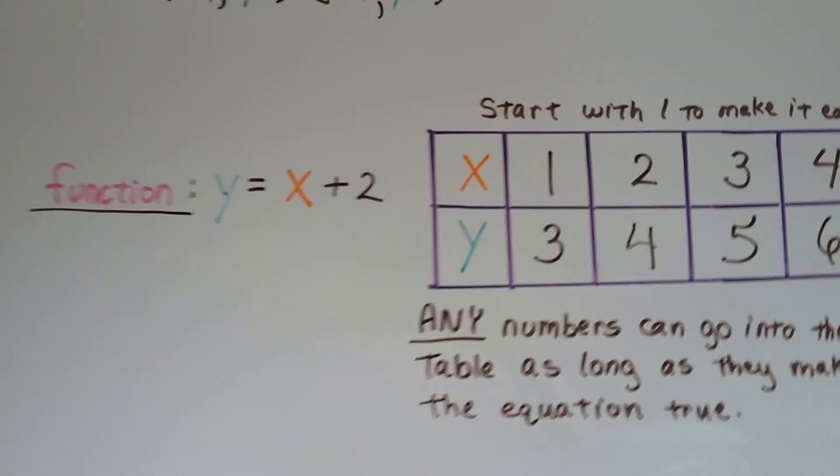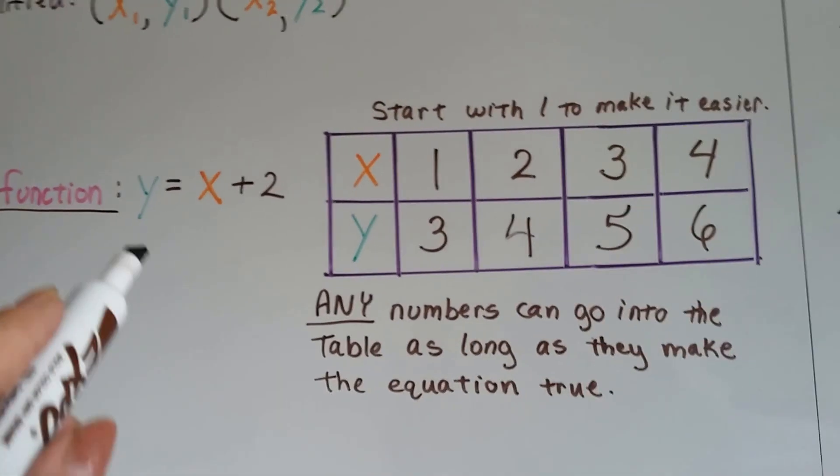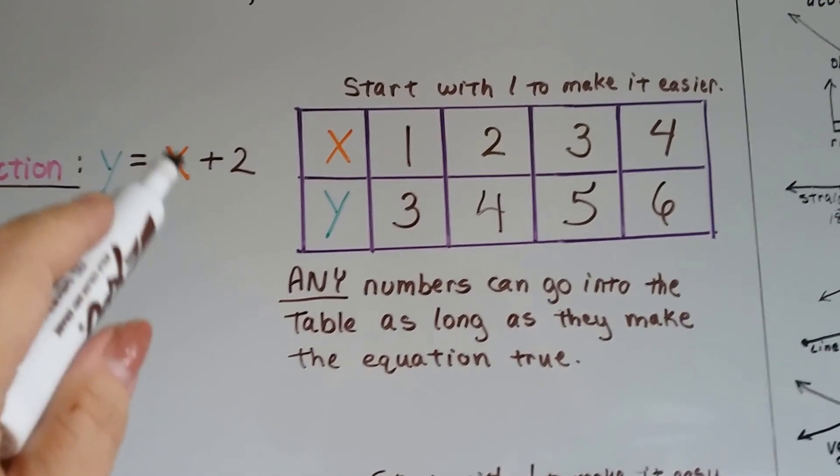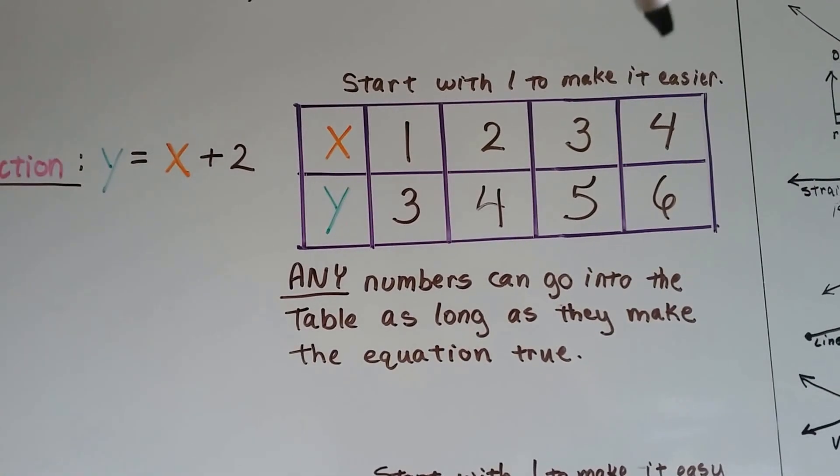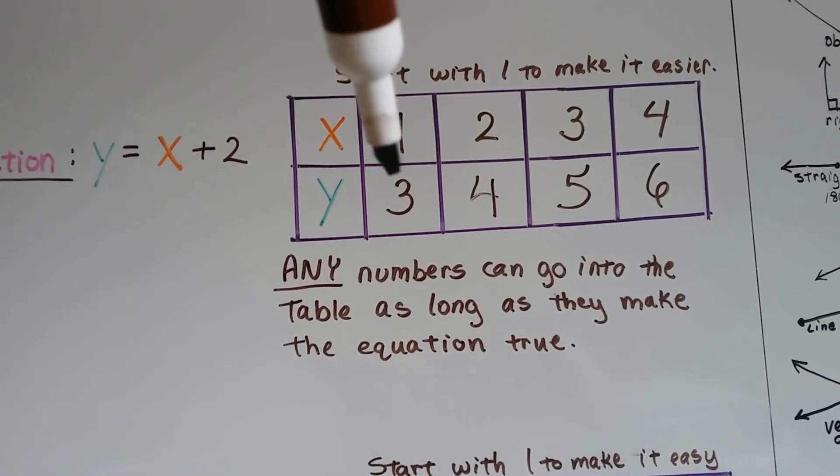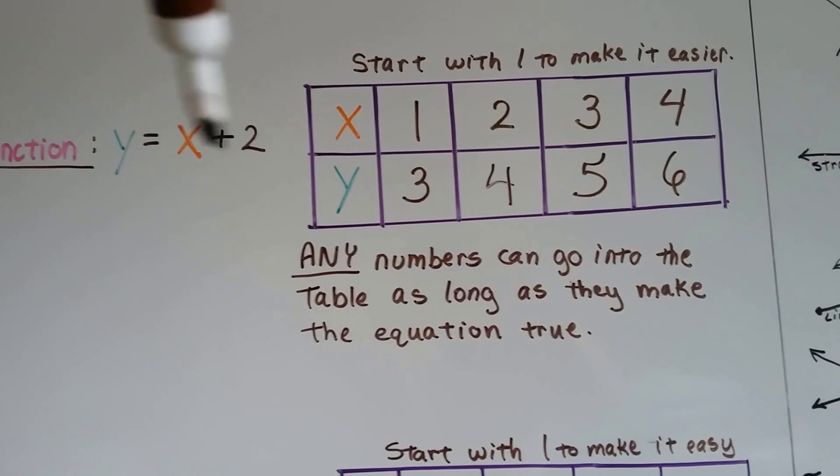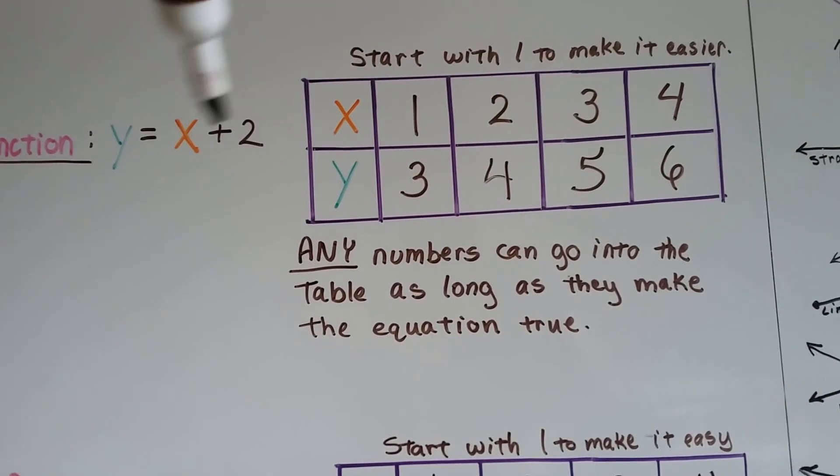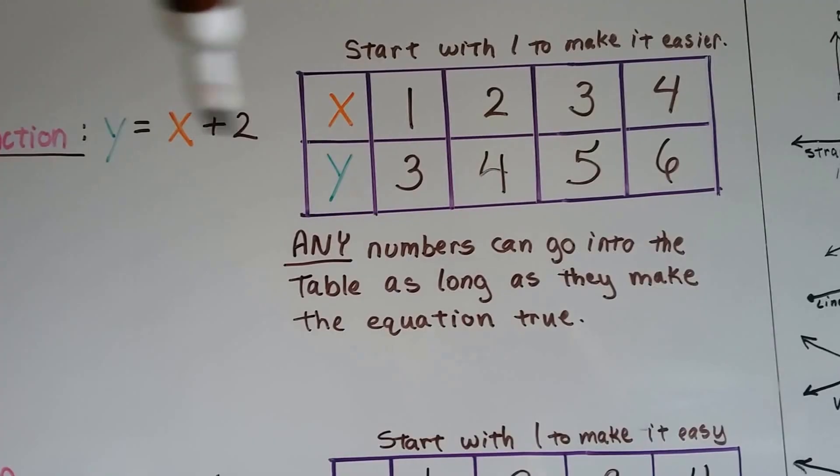Let's take a look at this one. This function, this equation is y equals x plus 2. Any numbers can fit in here as long as it makes this true. I'm going to start with 1 to make it easy. If x were 1, it would be 1 plus 2, y would be 3. It's going to equal y, y is 3. If x is 2, 2 plus 2 is 4, y is 4.